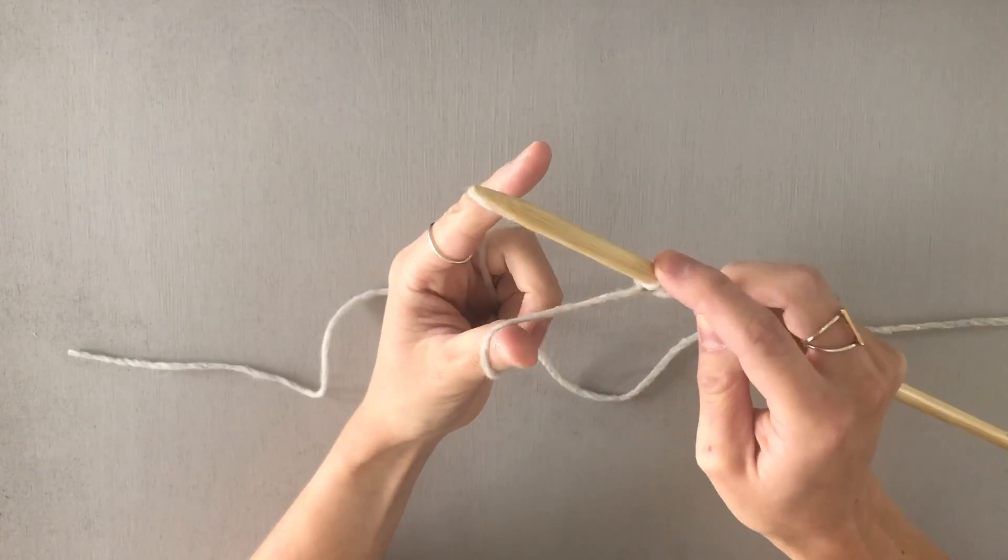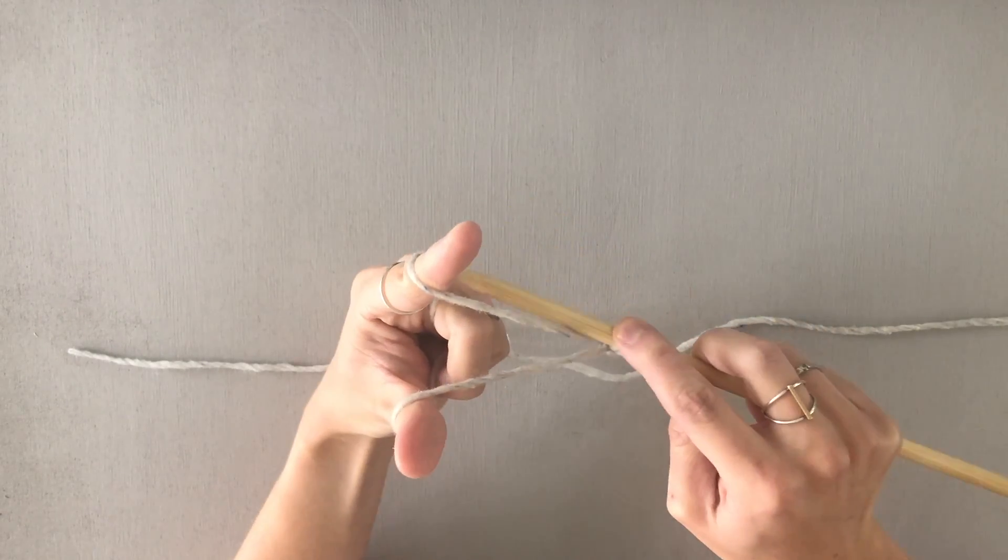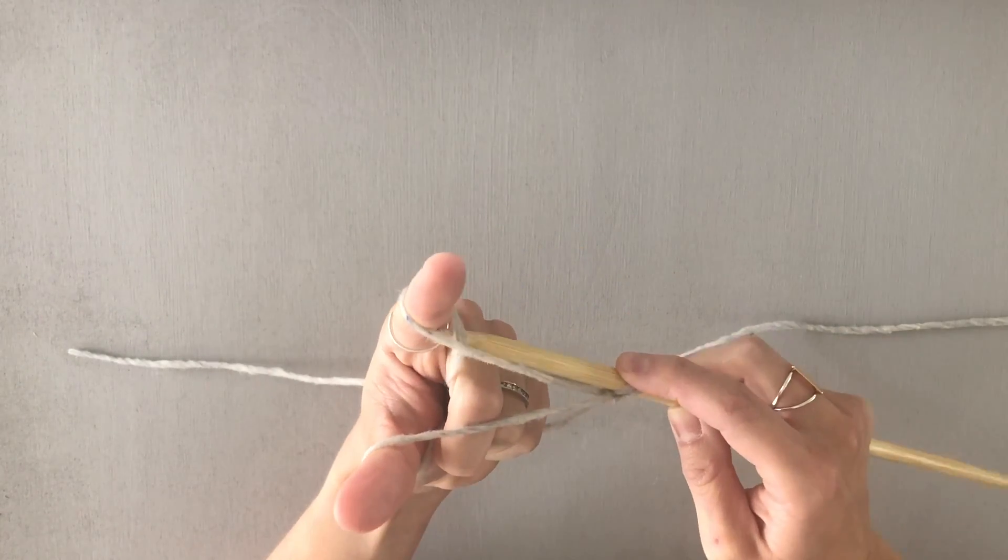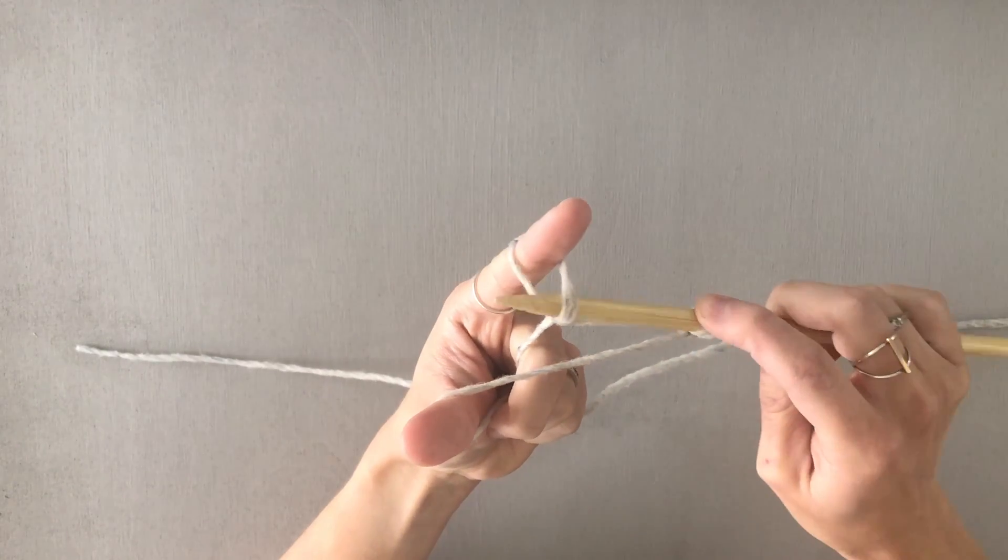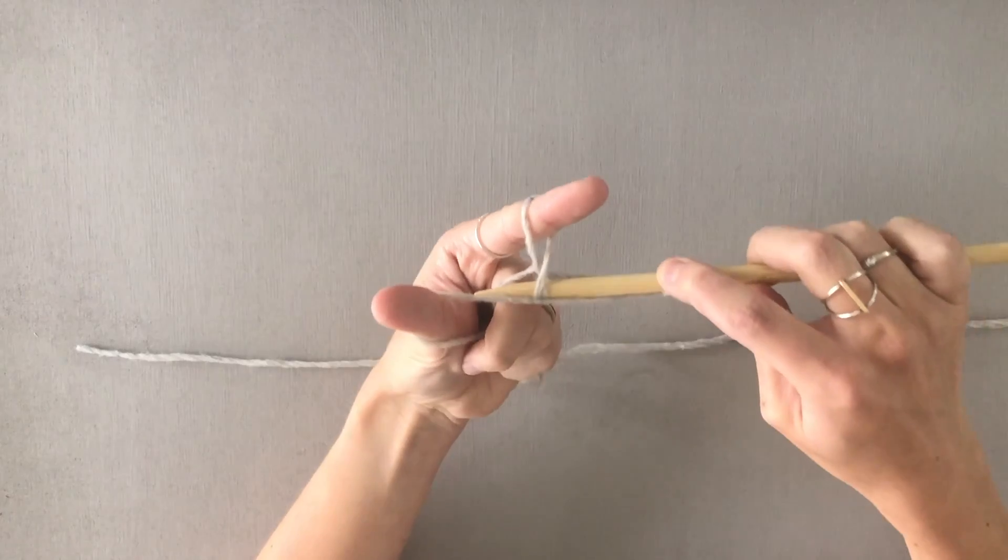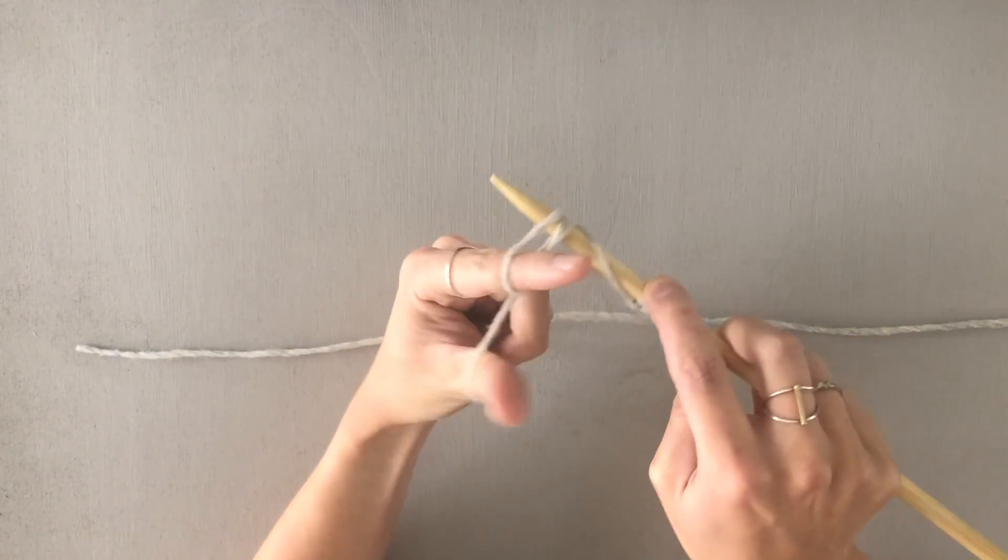I'll show you that again. Make your slingshot and bring your needle up to your pointer finger grabbing this strand of yarn that's the furthest away from you, then bring it down under this strand by your thumb and then back through the loop.